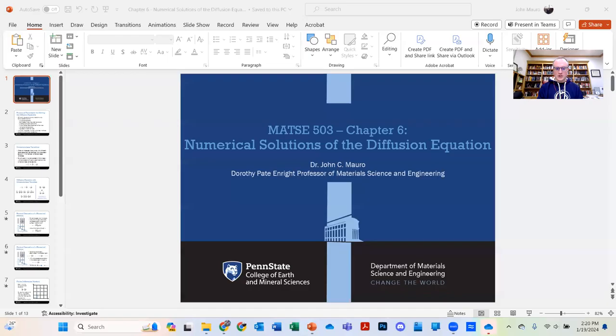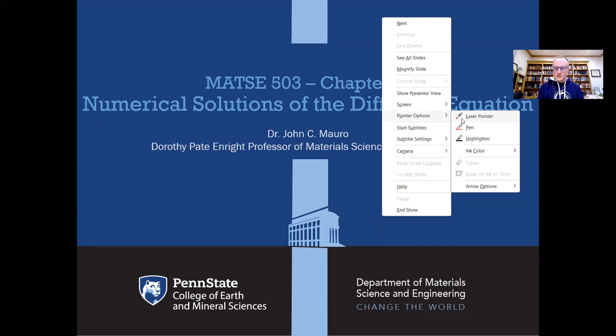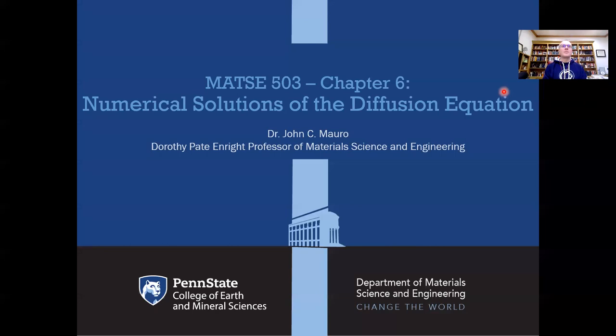Hello and welcome back to Materials Kinetics. Today we are on Chapter 6, which is Numerical Solutions of the Diffusion Equation. I'm going to share my screen and switch over to the lecture slides. This is one of the shorter chapters in the book, and basically, although we've spent the past few lectures going through setting up the diffusion equation and solving it analytically through a variety of methods, sometimes it's too difficult or even impossible to solve the diffusion equation analytically, and sometimes it's more convenient or even necessary to go to numerical solutions.